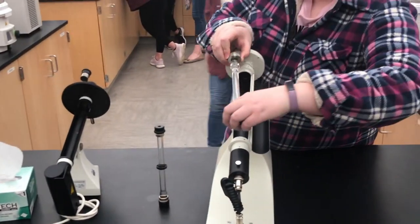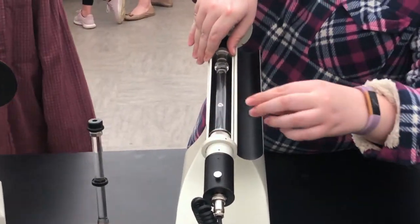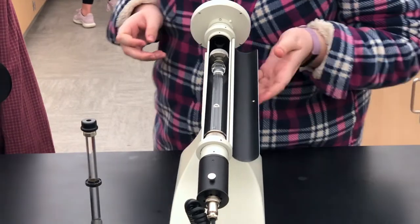Once the polarimeter is loaded, be sure to close the sheath surrounding the tube. This prevents noisy background light from skewing the reading.